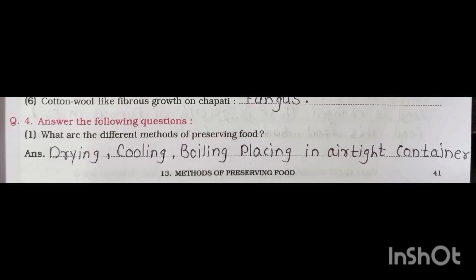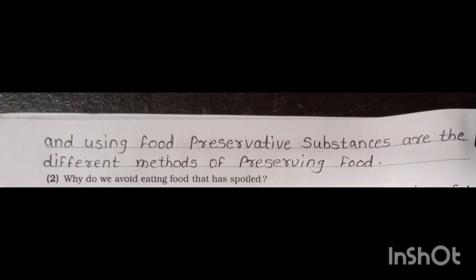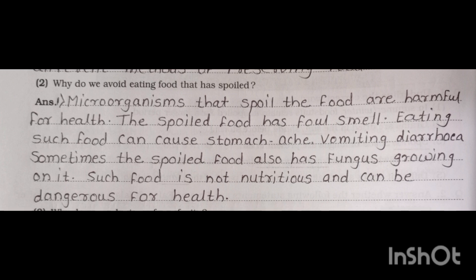Question number four: answer the following questions. First one: what are the different methods of preserving food? The answer is: drying, cooling, boiling, placing in an airtight container, and using food preservative substances are the different methods of preserving food. Second: why do we avoid eating food that has spoiled?